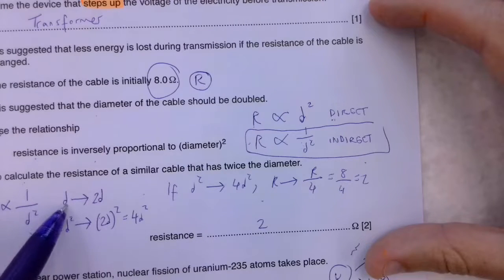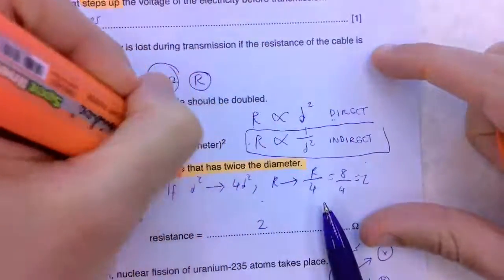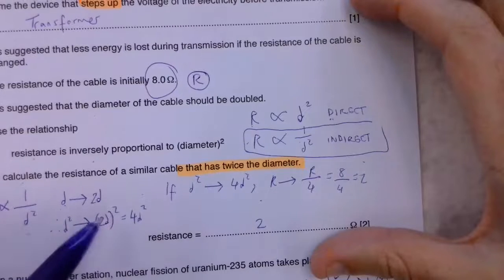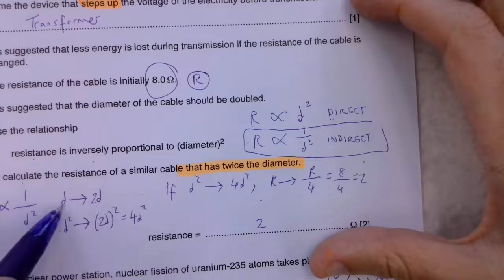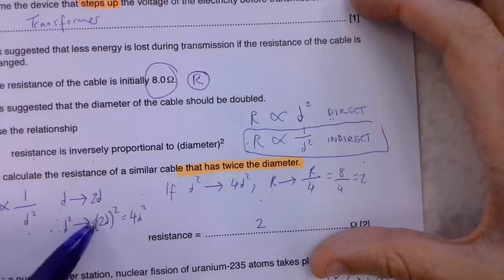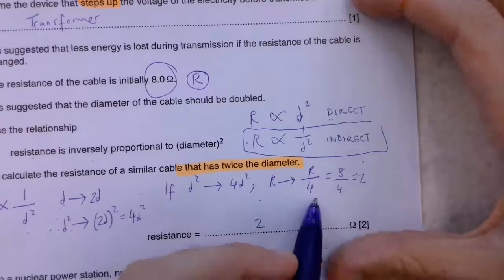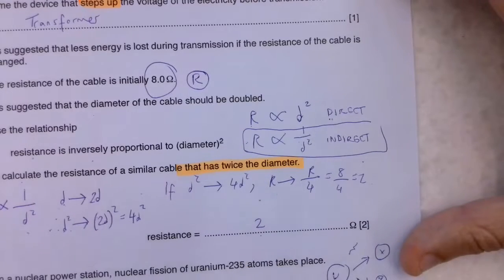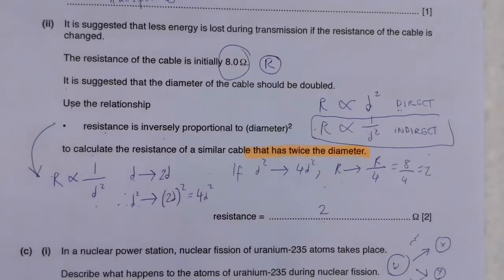If we've got D doubling twice the diameter, there's no equation that we've learned here. It's quite a tricky question. We want to double the diameter and see what the effect is on R. D goes to 2D. Well, D squared becomes 2D squared, which goes to 4D squared. What that means is D squared has gone up by a value of 4, which means R has gone down by a factor of 4, meaning my resistance here has gone down to 2. We began with 8 divided by 4 gives 2.